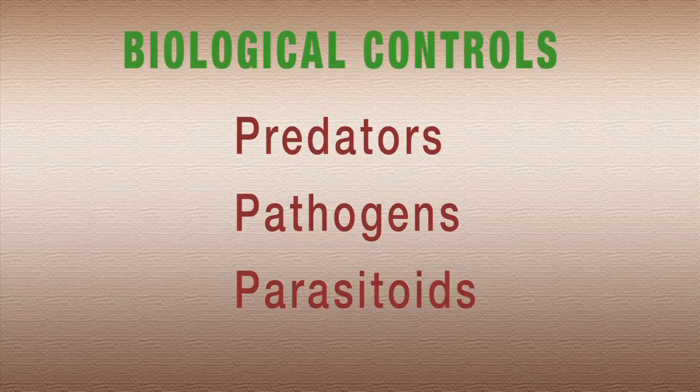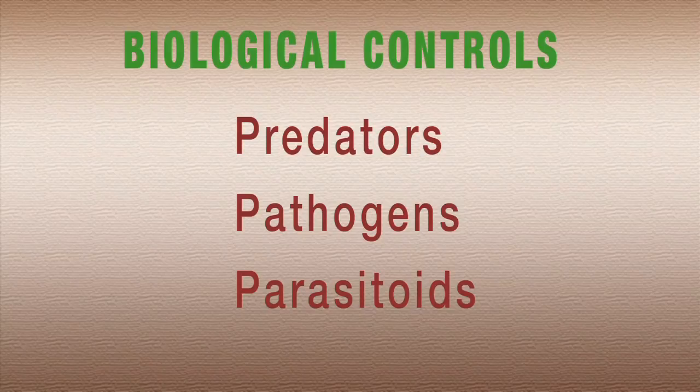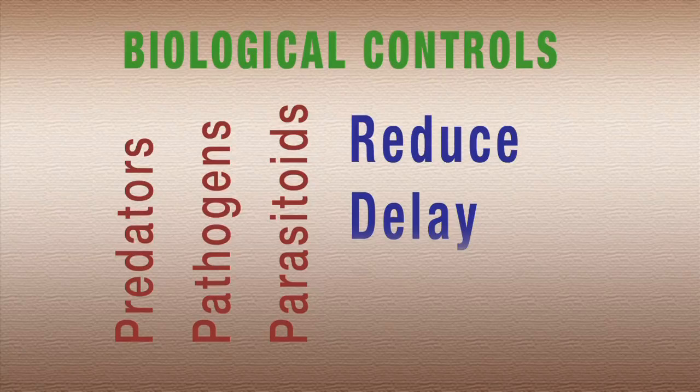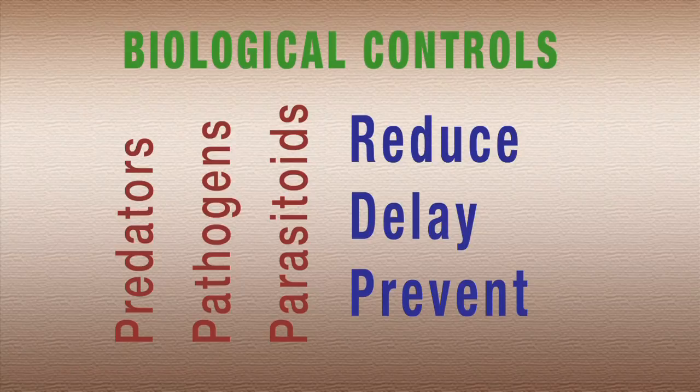Biological control is the use of what I call the three Ps: predators, pathogens, and parasitoids to reduce or control pests. And they do this through one of three actions. They might reduce the pest population, delay it so that you can grow your crop before they become a problem, or prevent a pest problem altogether.